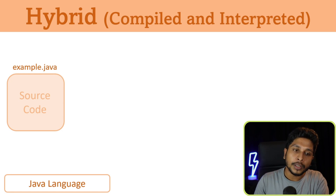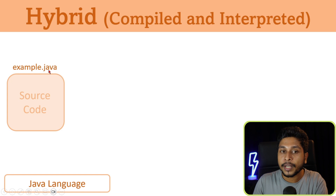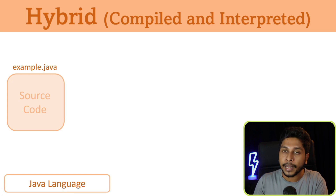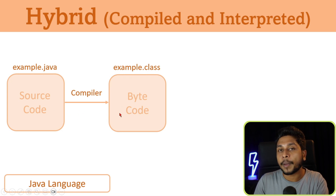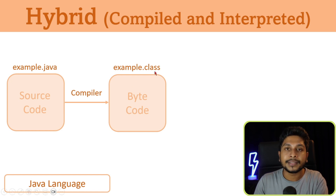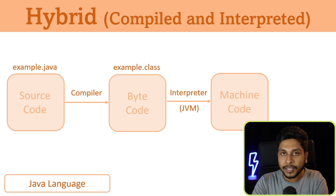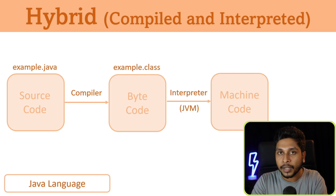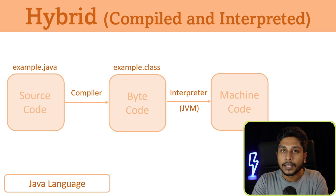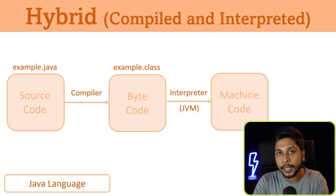We can use Java languages. We can use example.java to create a Java file. With the source code and machine code, we can compile it with the source code and convert it to bytecode. By using the bytecode, we can use the interpreter to produce machine code.